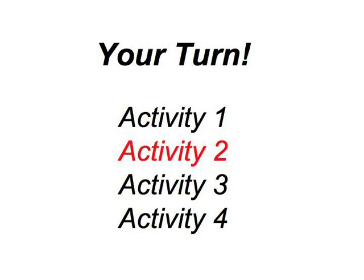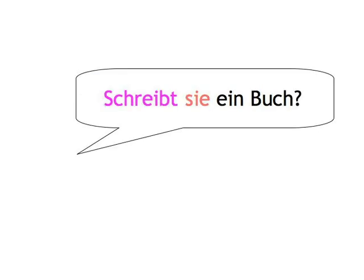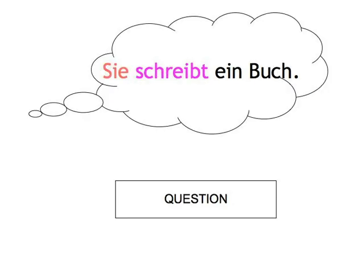When we say, 'Sie schreibt ein Buch,' turn this into a question. You say, 'Schreibt sie ein Buch?' Let's start then. Sie schreibt ein Buch. — Schreibt sie ein Buch?